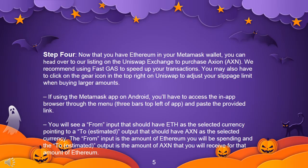Step 4: Now that you have Ethereum in your Metamask wallet, you can head over to our listing on the Uniswap exchange to purchase Axion. We recommend using FastGas to speed up your transactions. You may also have to click the gear icon in the top right on Uniswap to adjust your slippage limit when buying larger amounts. If using the Metamask app on Android, access the in-app browser through the menu and paste the provided link. You will see a 'from' input with ETH and a 'to' output with AXN — the from input is the amount of Ethereum you'll spend, and the to output is the amount of AXN you will receive.